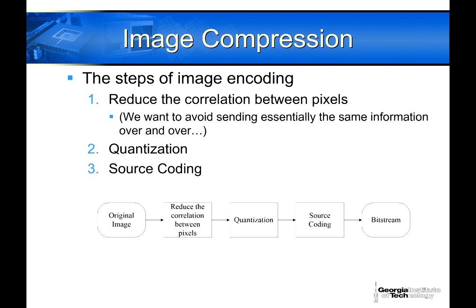The basic steps in image compression: we want to get rid of redundant information. The first step is to reduce the correlation between pixels — we don't want to send the same information over and over. Then we do quantization, or in other words, approximate. It's a lot easier to send the number 2 than the number 2.135976428. So quantization is getting rid of some information in a way so that it's easier to send what remains.